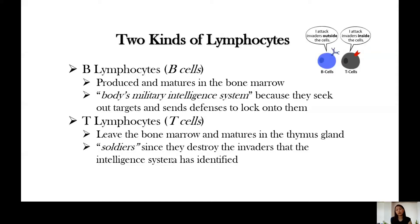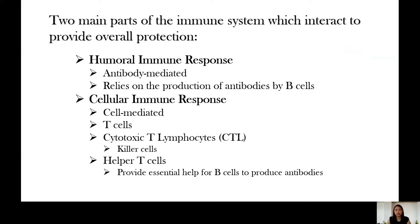When B lymphocytes encounter a pathogen, they tag it as an invader so that later when the T cells recognize them because of the tag that the B lymphocytes applied, they are the ones that will be attacking the pathogens. T lymphocytes leave the bone marrow and mature in the thymus gland. They are the soldiers, since they destroy the invaders that the intelligence system has identified.